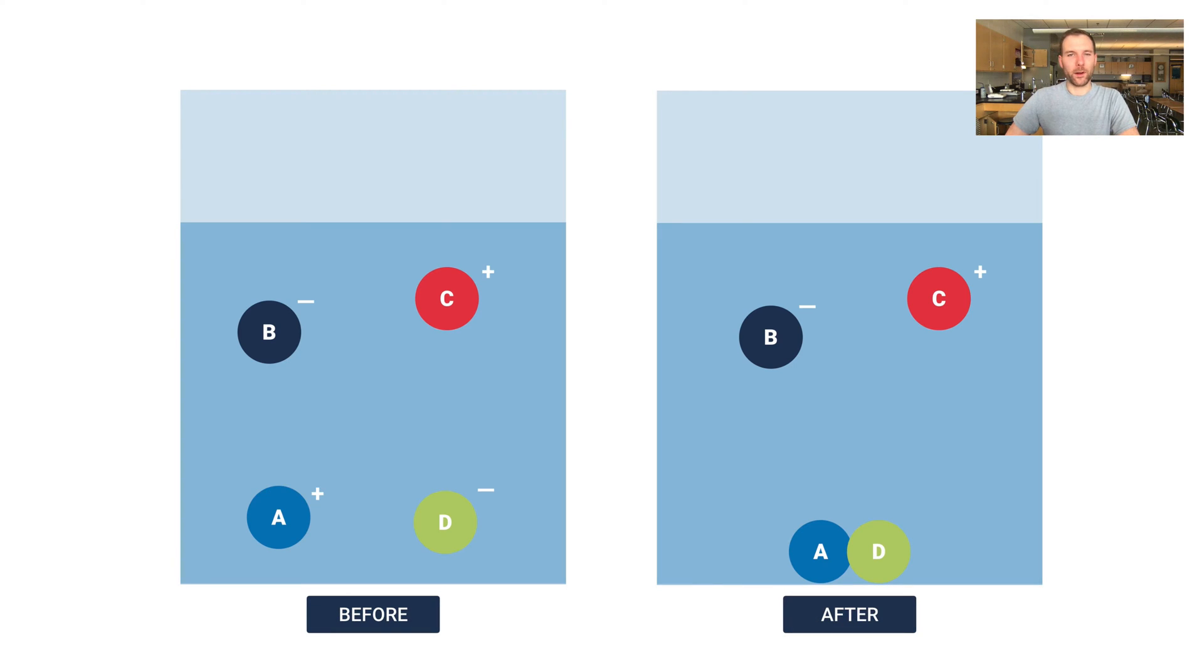Now let me show you a before and after situation of this exact reaction here. Before we had B minus, C plus, A plus, and D minus all floating around as dissociated dissolved ions. Afterwards we have B minus and C plus looking just the same. But now we have AD that's connected together. That result is insoluble and it sinks to the bottom of the flask.